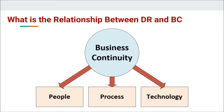By contrast, when we look at business continuity, it places pretty much equal emphasis on people, process, and technology. I would actually argue that people and process are probably the more important part, since technology is usually covered by disaster recovery. Again, disaster recovery works as part of a business continuity plan — it's not a replacement for a business continuity plan.